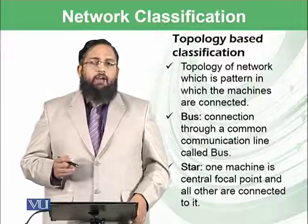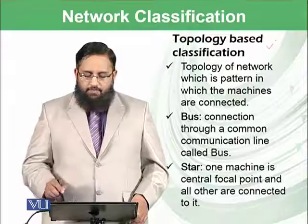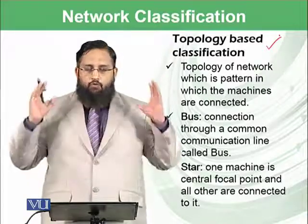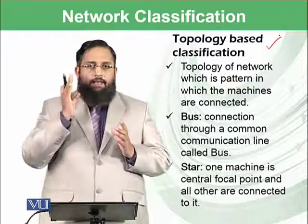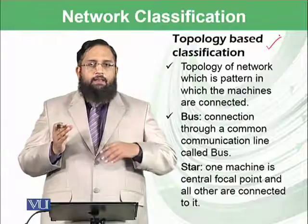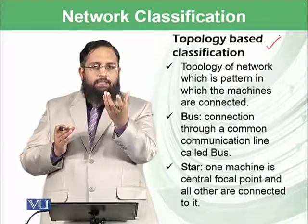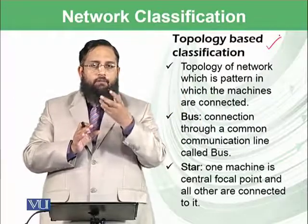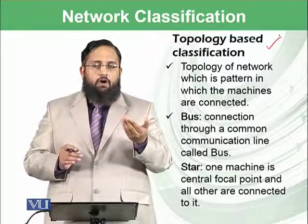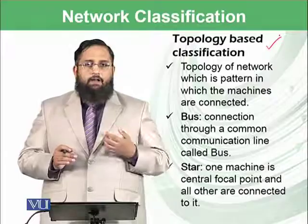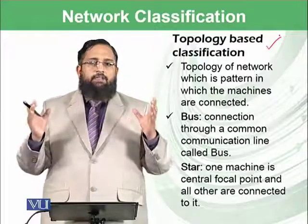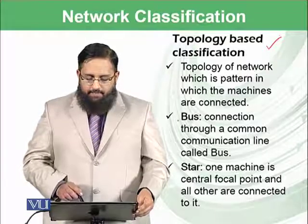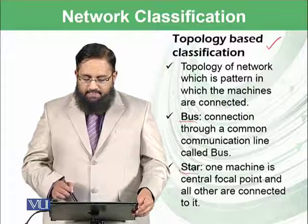There is another type of network classification based on topology — that is, how the computers are connected together. For example, there could be a number of computers connected with one line, or one computer serving as the main hub with all others connected to that central focal point, similar to the client-server architecture discussed earlier. We will mainly discuss two topologies: bus and star topologies.